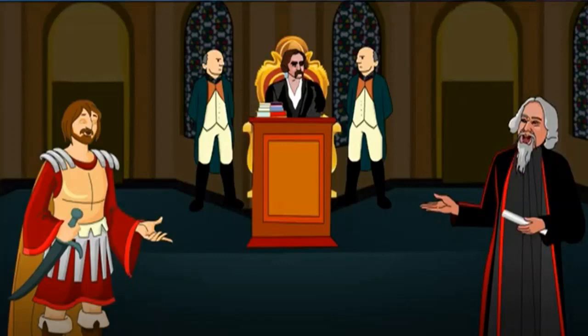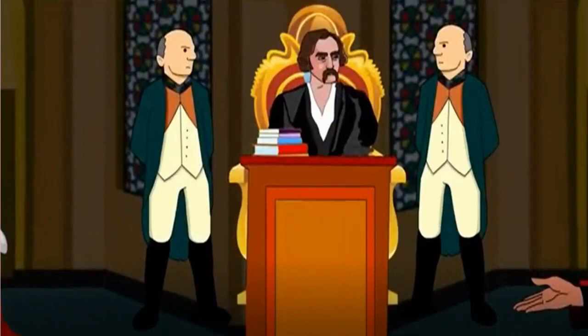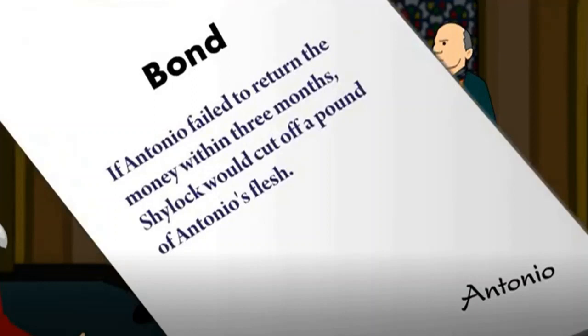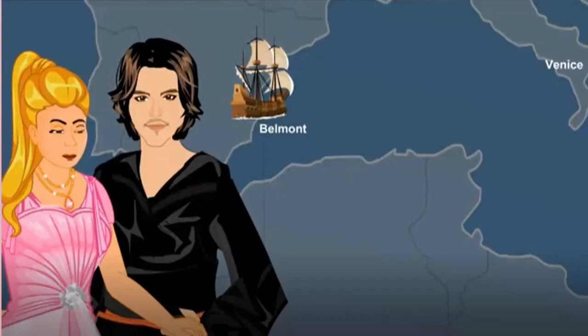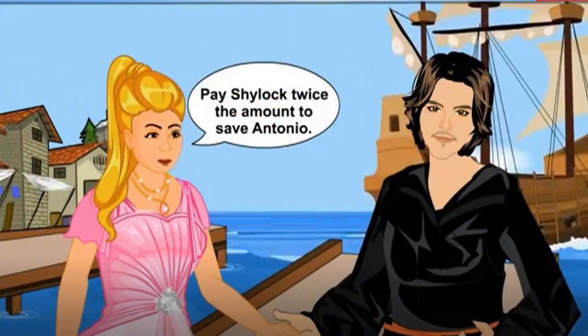The Duke liked Antonio and was sorry for him, but what could he do? Antonio had written a bond — a legally binding agreement — and according to the law, Shylock was right. When Bassinio and Portia heard all this, they rushed back to Venice. Portia told Bassinio to pay Shylock twice the amount to save Antonio.